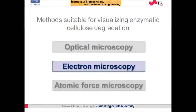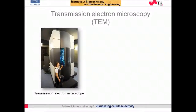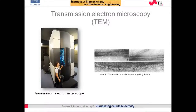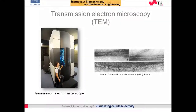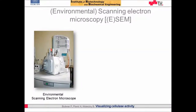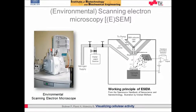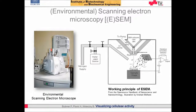In transmission electron microscopy, high resolutions down to the atomic scale can be achieved. It was widely used in the beginning of cellulase visualization in the 80s. However, due to the non-environmental conditions used, TEM application for cellulase visualization is limited. Classical scanning electron microscopy needs an electrically conductive surface layer and vacuum in the sample chamber. Environmental SEM allows measurements at higher pressures and is thus suitable for investigation of hydrated and uncoated biological samples.